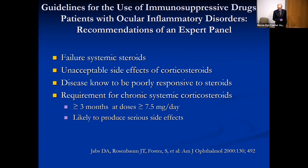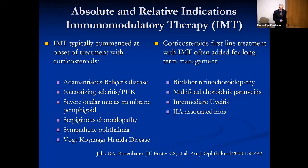Almost two decades ago, guidelines were published for the use of immunosuppressive drugs in patients with more severe posterior and pan-uveitis requiring immunomodulation. Recommendations included failure of systemic corticosteroids, unacceptable side effects, diseases known to be poorly responsive to steroids, and the requirement for chronic corticosteroids greater than 7.5 mg per day. This publication also recommended immunomodulatory therapy be commenced at the onset of treatment for certain diseases associated with systemic conditions, such as Behcet's disease, necrotizing scleritis, and peripheral ulcerative keratitis with or without underlying systemic vasculitis.